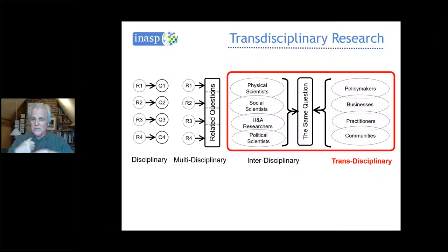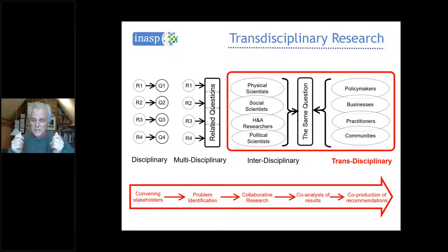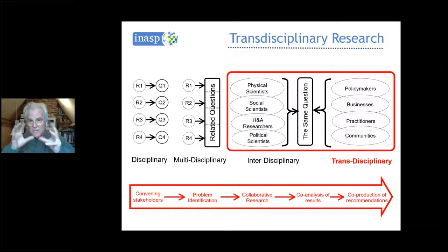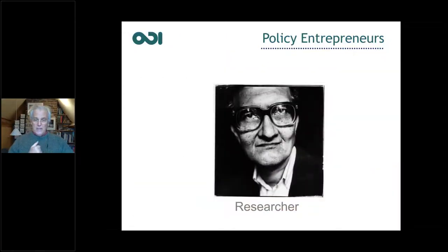There's a process involved in this: convening the stakeholders, identifying the problem, collaborative research, and then these two last bits are really important — co-analysis of results, where it's not just academics thinking about what they can learn but academics and other stakeholders sitting together thinking how this helps solve the problem, and then co-production of recommendations. It is transdisciplinary research which is likely to have the most impact. To do that, you need a team with a wider range of skills — you obviously need to be a researcher doing very good research.